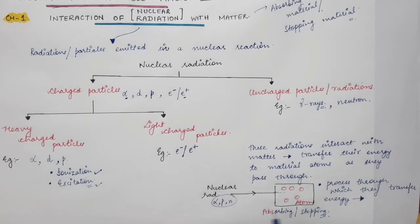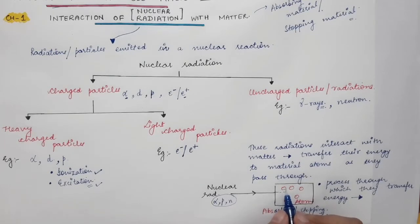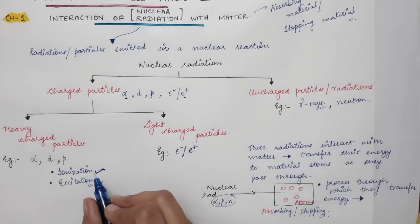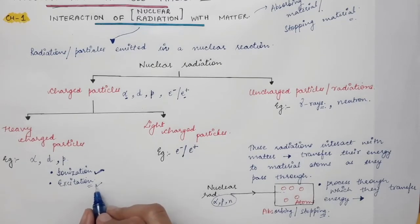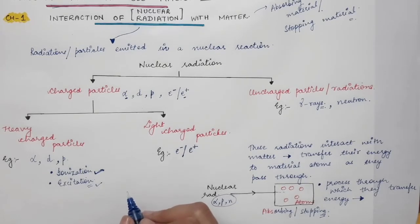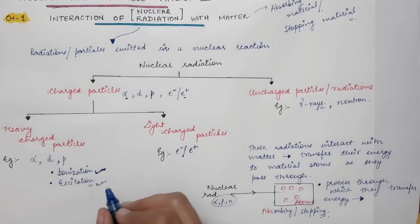The other process in the case of heavy charged particles is excitation. Instead of ionization, the heavy charged particle transfers its energy to the atom, causing the atom to go to an excited state. When the atom de-excites, it emits photons. So in ionization, orbital electrons are knocked out, whereas in excitation, photons are emitted due to de-excitation of atoms of the medium.